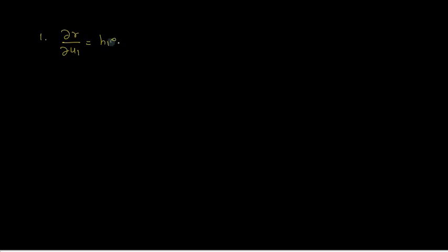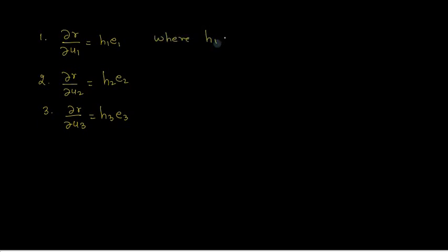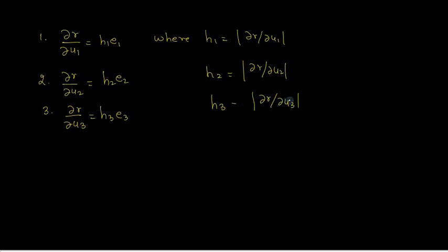Writing all three terms: del r / del u1 = h1 · e1, del r / del u2 = h2 · e2, and del r / del u3 = h3 · e3. Here h1 = |del r / del u1|, h2 = |del r / del u2|, and h3 = |del r / del u3|. These h1, h2, h3 are called scale factors.